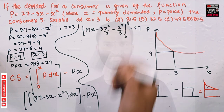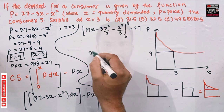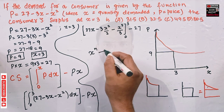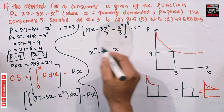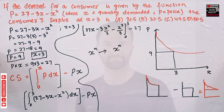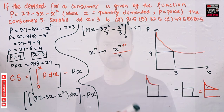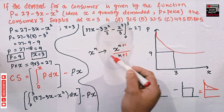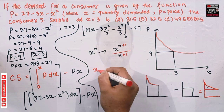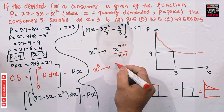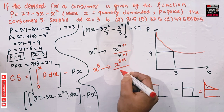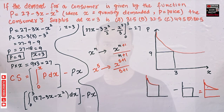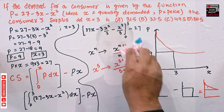As a reminder, the power rule for integration states: the integral of x^n is x^(n+1) / (n+1). For example, the integral of x⁴ is x⁵/5. That is the rule I have applied here for each term in the demand function.